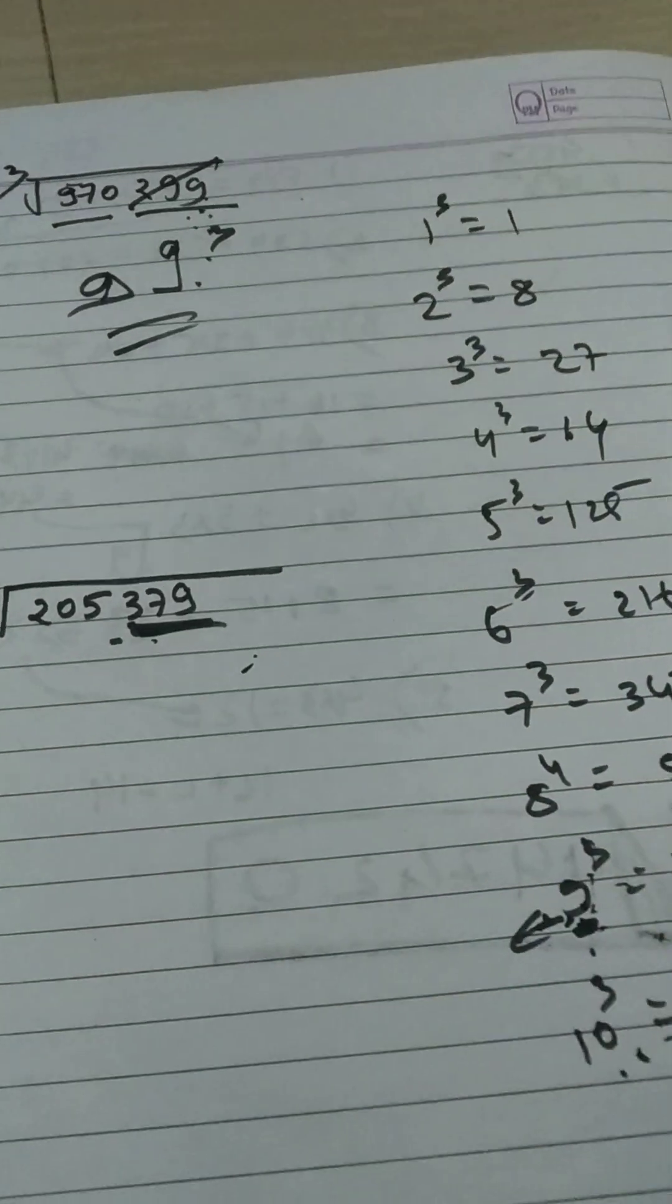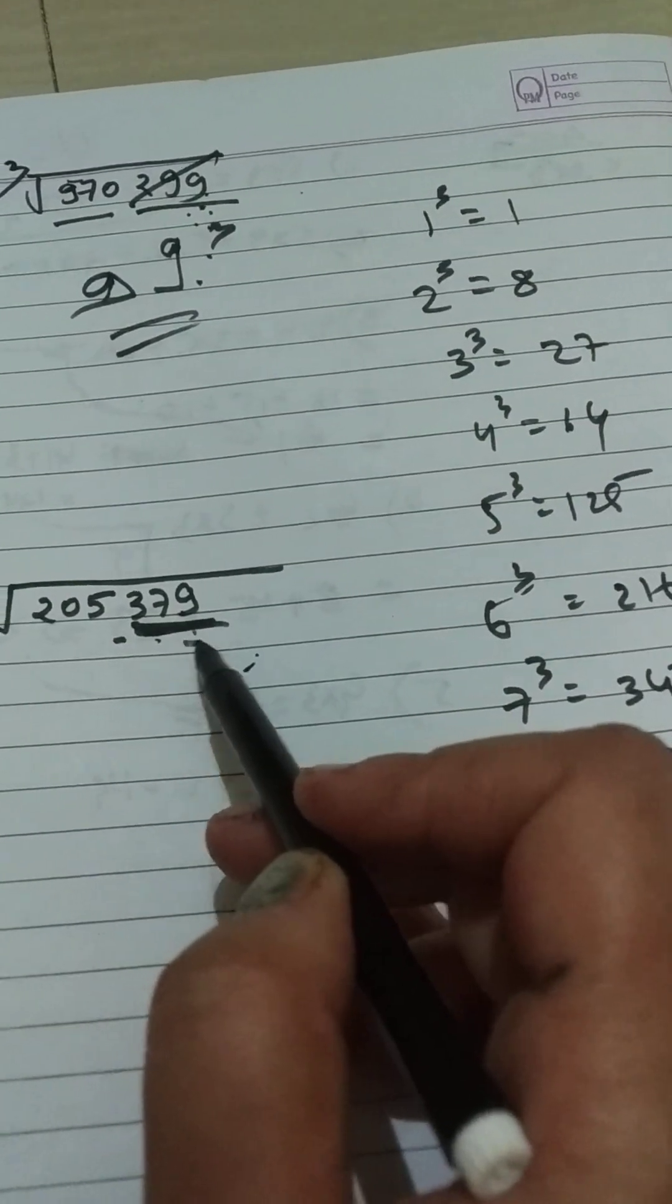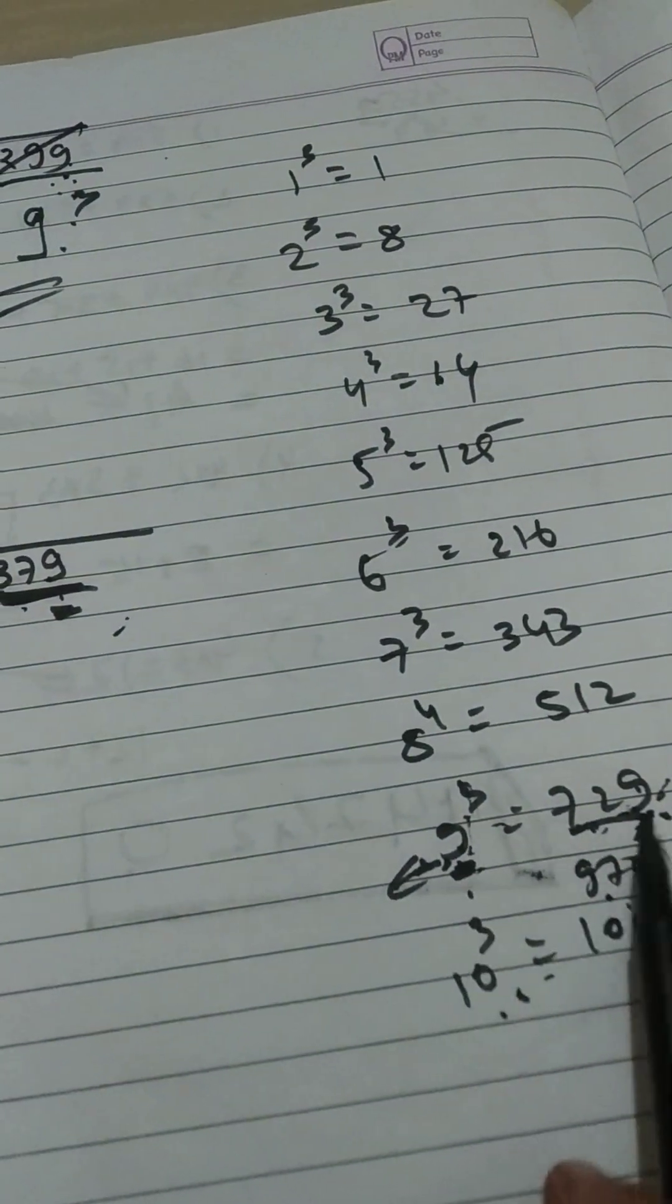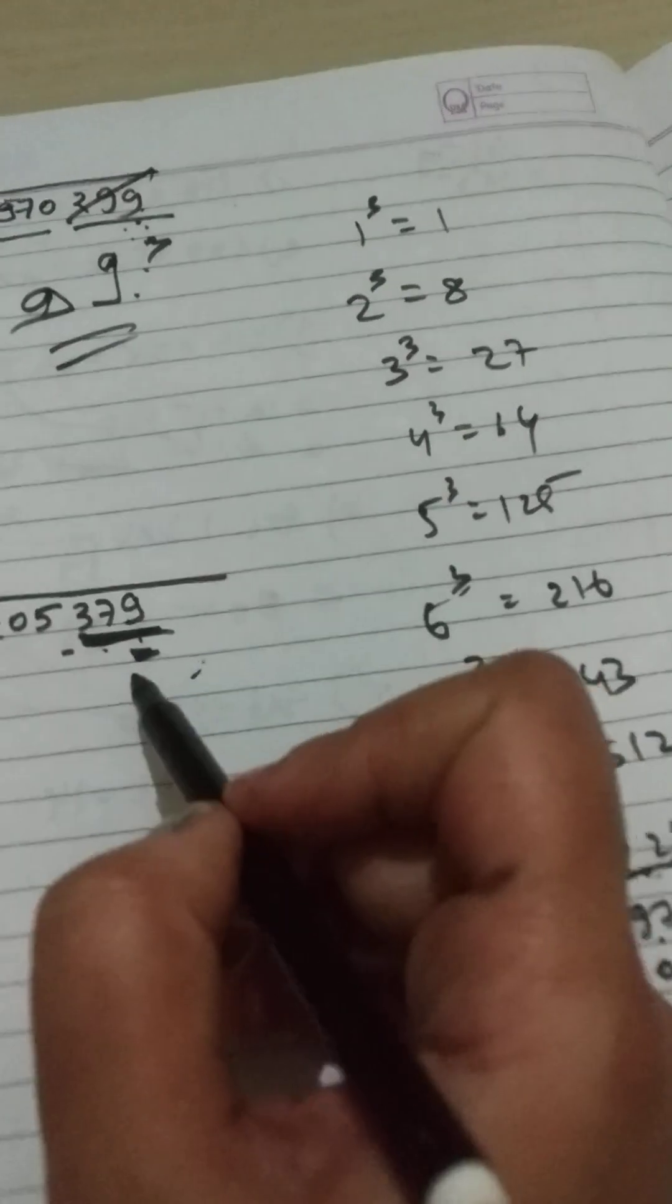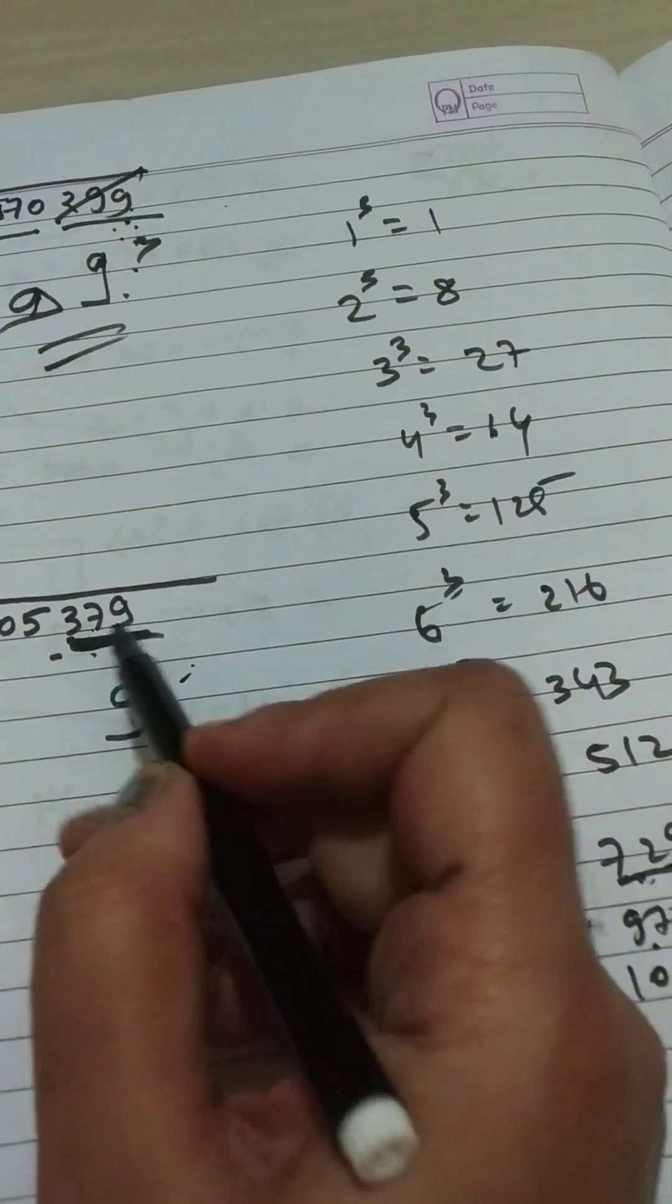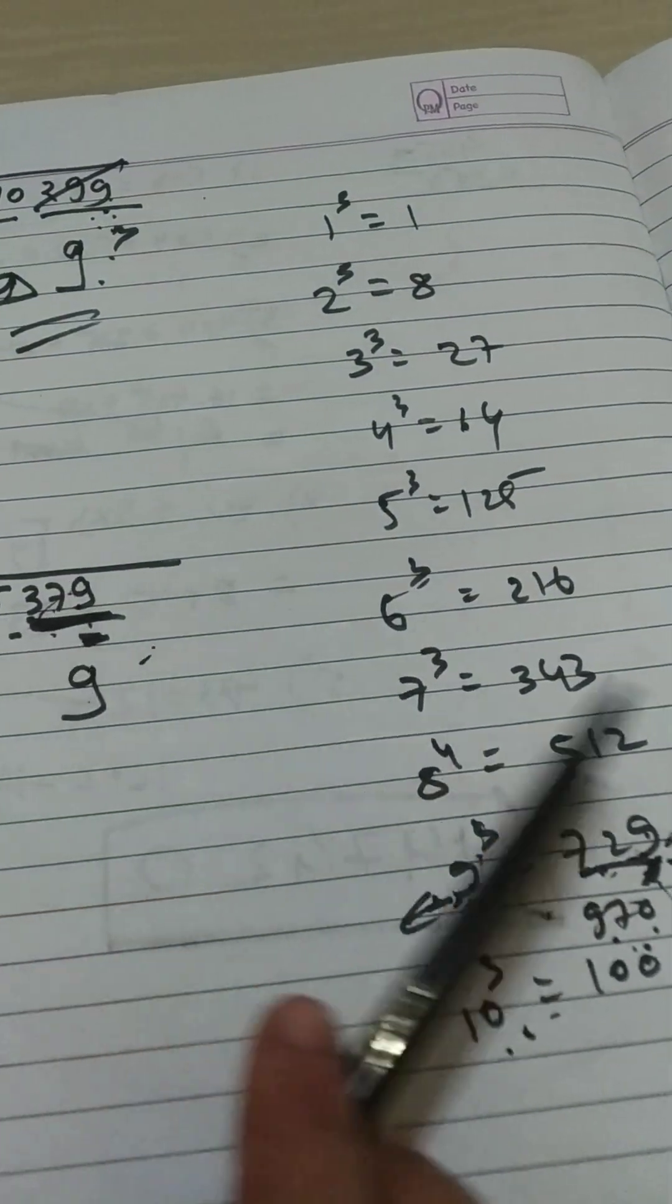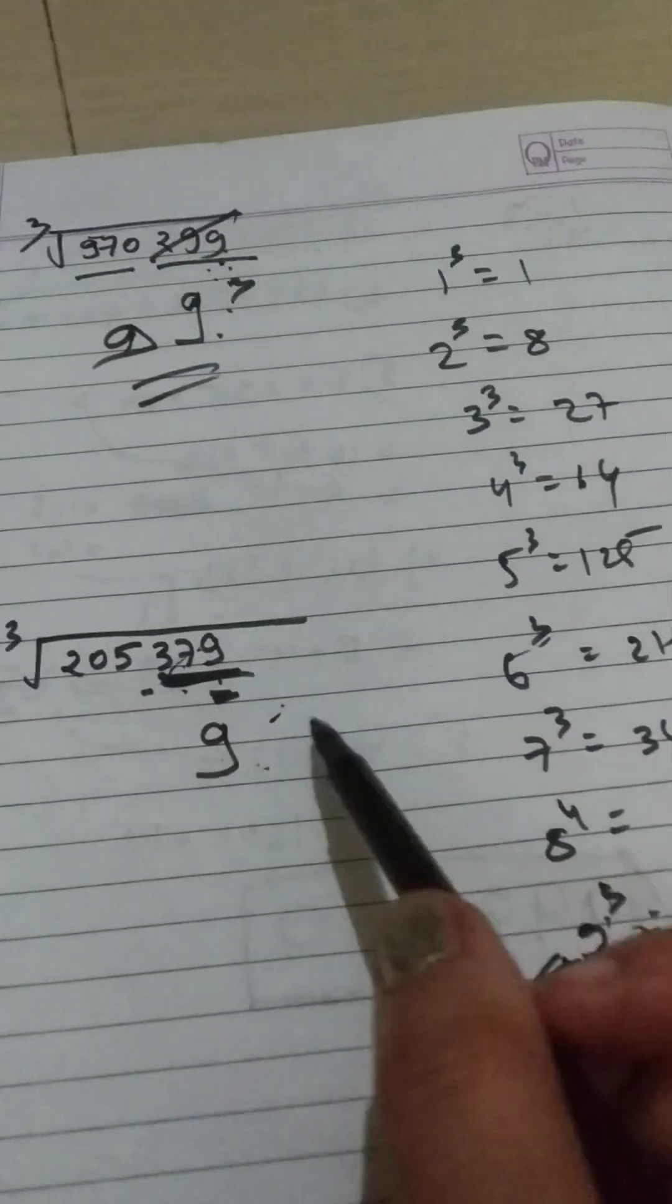Similarly, if we see here 379, the unit digit is 9. So 9³ is 729, that is 9 in the unit digit. We will put 9 here. 9³ is 729, and 9 and 9 is matching to each other, so we will put 9 here.